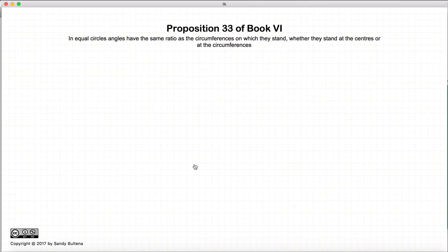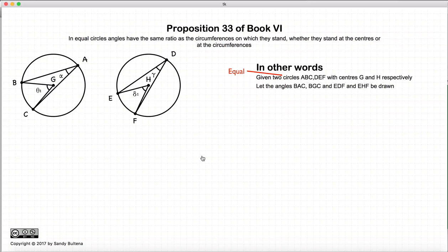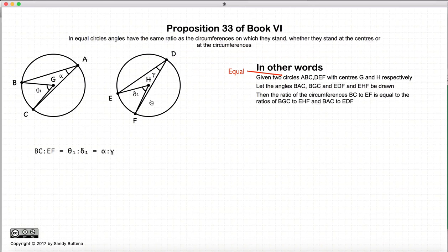This video presentation is on Proposition 33 of Book 6. In this proposition, if we have two circles ABC and DEF with centers G and H respectively, and we draw two angles theta1 and delta1 inside the two respective circles, then this proposition states that the ratio of arc BC to EF will be equal to the ratio of angle theta1 to delta1, and it will also be equal to the ratio of alpha to gamma.